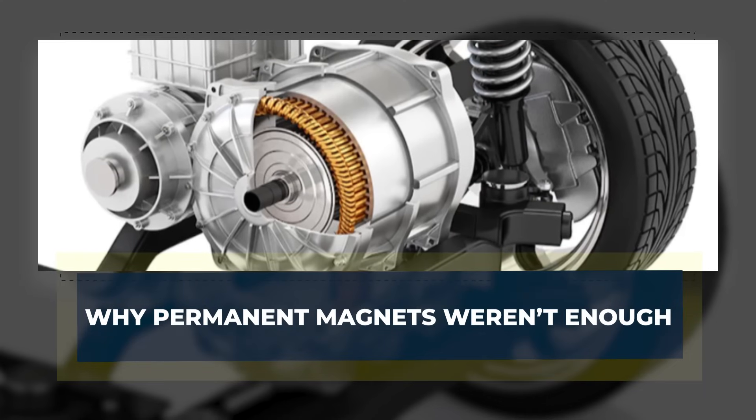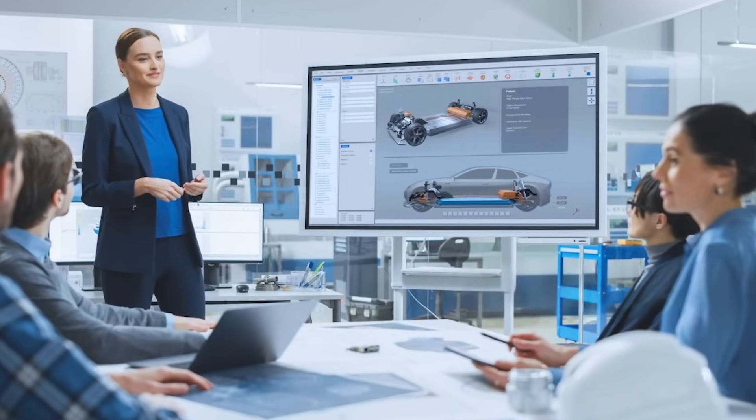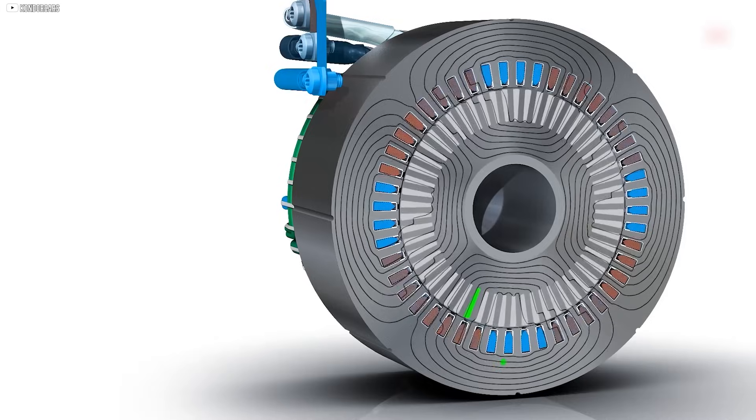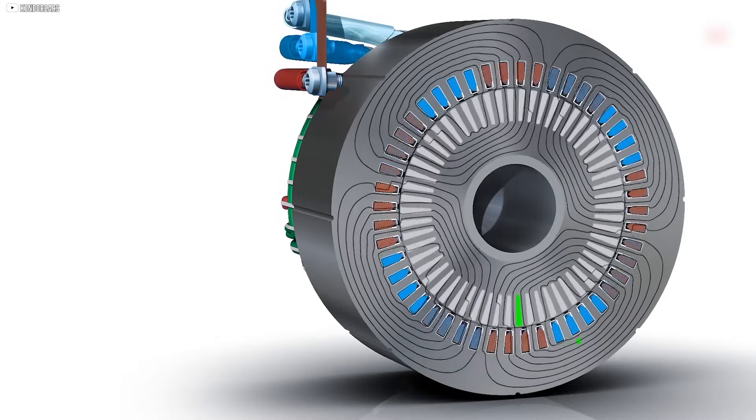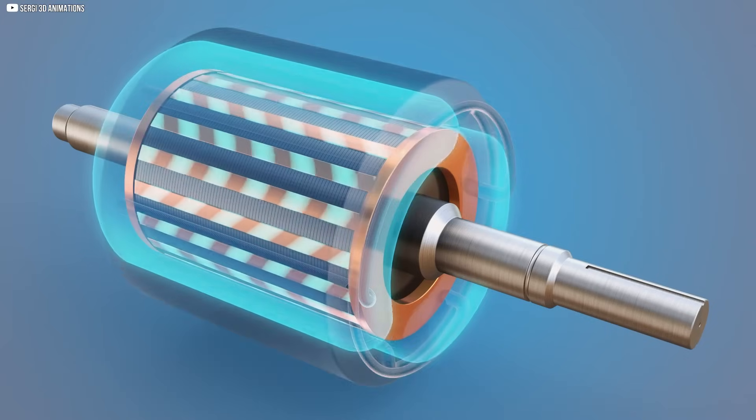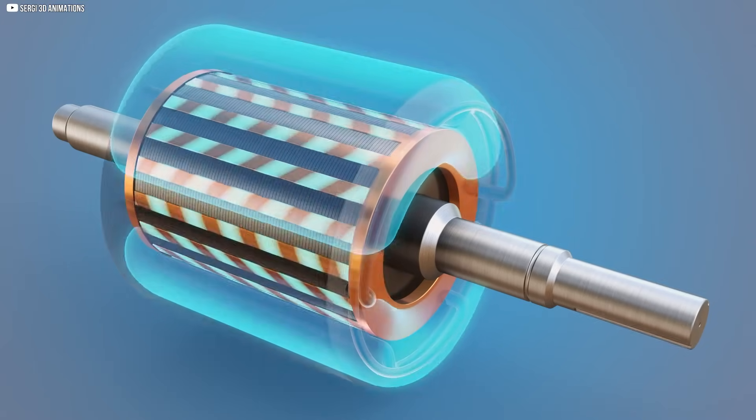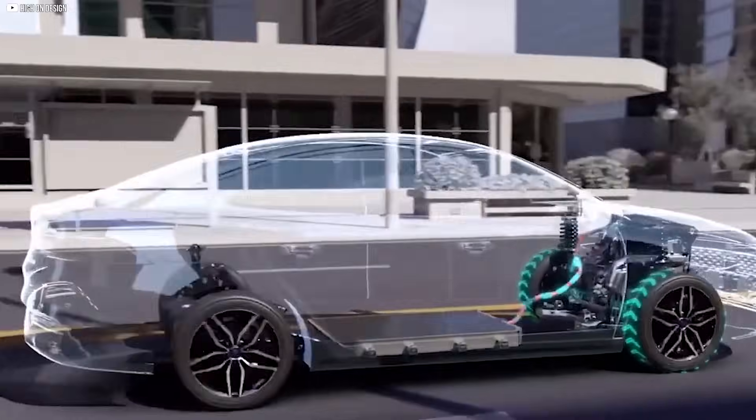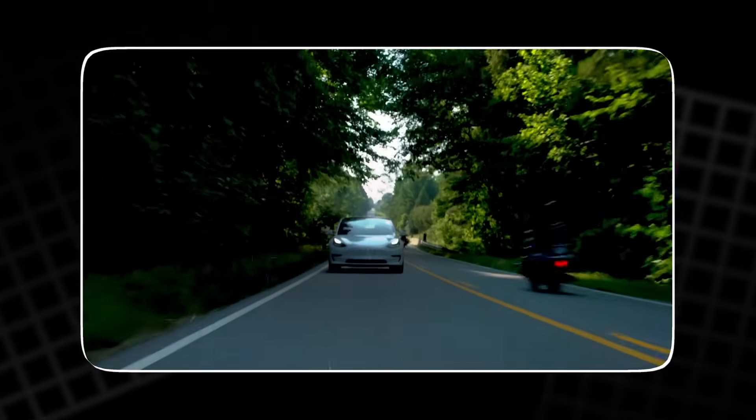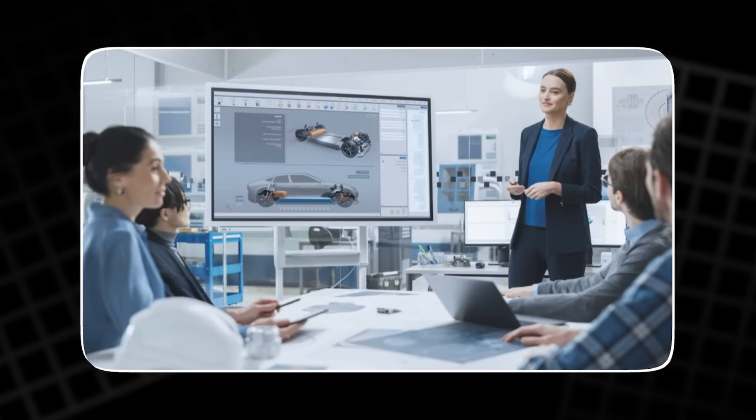When Tesla engineers looked for alternatives, permanent magnet motors seemed like the obvious choice. Unlike induction motors, these didn't rely on induced currents inside the rotor. Instead, they used strong, carefully placed magnets that created a constant magnetic field. The advantage was immediate: more starting torque, better low-speed efficiency, and less wasted energy. On paper, this sounded perfect.